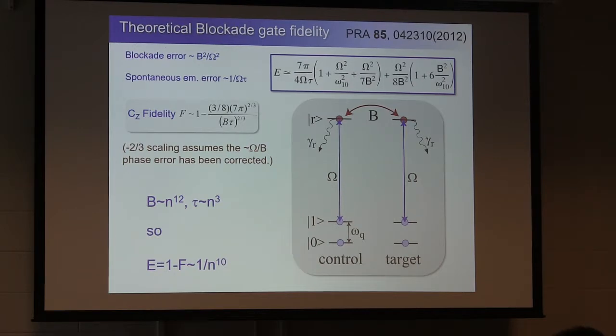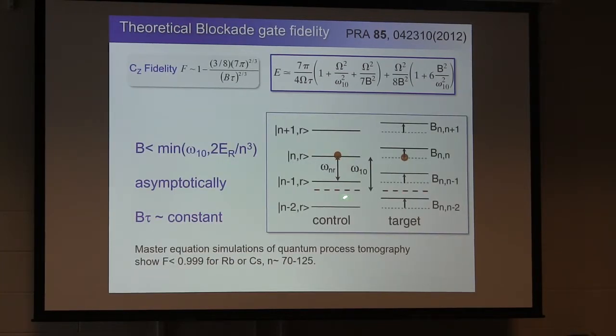So then you say, well, as I go to high N, the Van der Waals interaction goes like N to the twelfth in heavy alkalis. The lifetime goes like N cubed, so I get one over N to the tenth. I should be able to get arbitrarily high fidelity. But, as Thierry mentioned, there's no two-level atoms. And this is not a complete enough picture. And so you don't have that amount of blockade available.